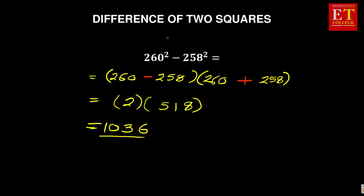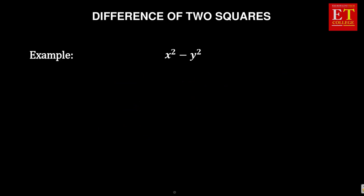So you can see that using the concept of a difference of two squares, we can find the answer without using a calculator. The concept says: if you are given x squared minus y squared, you simplify it as two brackets — (x minus y) times (x plus y). You can start with either the negative or positive bracket first. So you have simplified that expression using the difference of two squares.